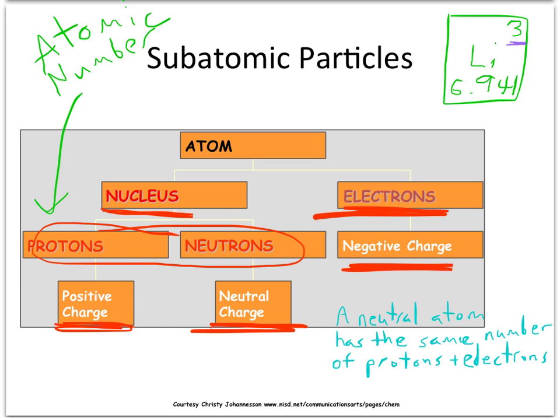Another thing you should know is that a neutral atom has the same number of protons and electrons. What does this mean? For example, a typical lithium atom has, it always has three protons.